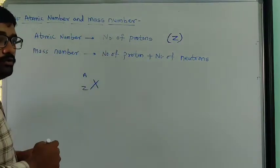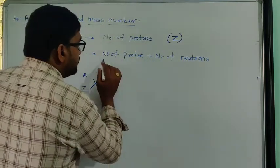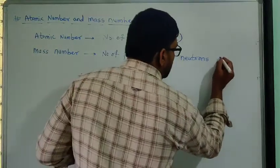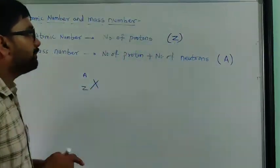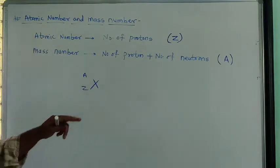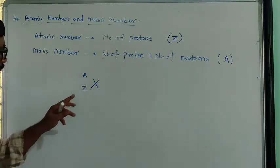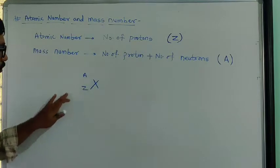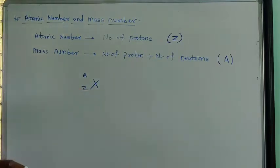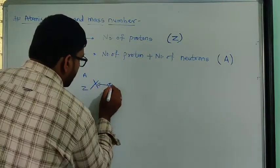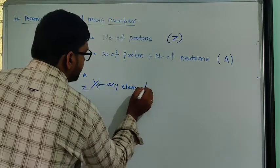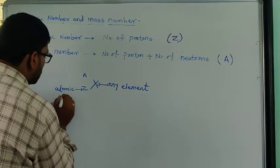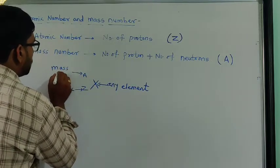What is mass number? The mass number of any element is the addition of the number of protons and the number of neutrons. Proton and neutrons are situated inside the nucleus, so mass number is the number of protons plus the number of neutrons. Mass number is denoted by the letter A. So Z is the notation for atomic number and A is the notation for mass number.